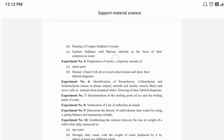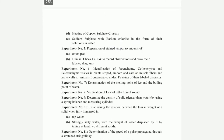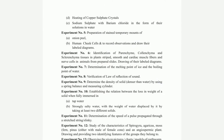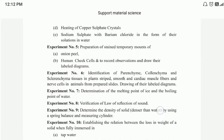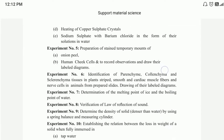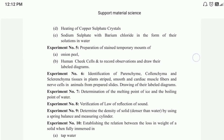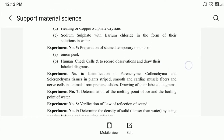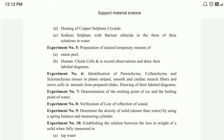This is experiment number 5, which is about staining and preparing a temporary mount — specifically an onion peel.